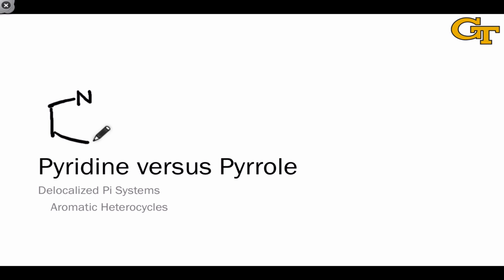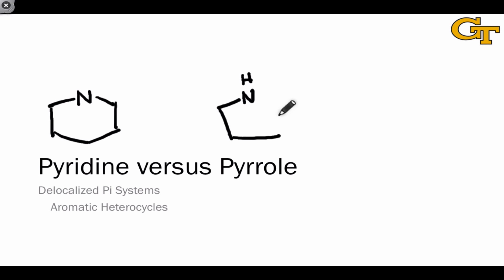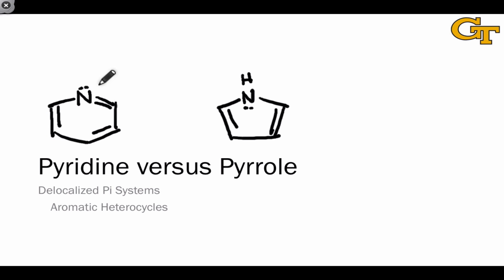Superficially, the molecules pyridine and pyrrole look fairly similar. They're both aromatic, they're both heterocycles, they both contain carbon and nitrogen. But these two aromatic heterocycles are fundamentally different. In this video, we'll look at the differences in structure and reactivity between pyridine and pyrrole and trace these back to differences in the nature of the nitrogen atom within these two structures.